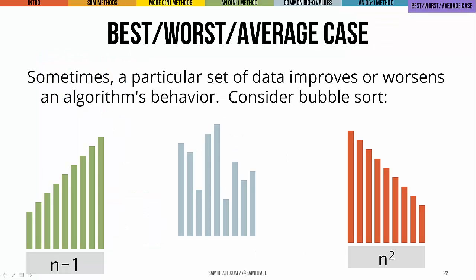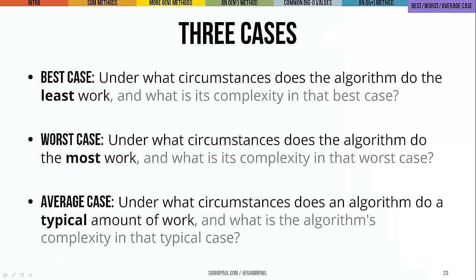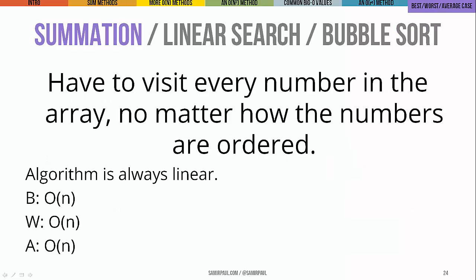Lots of algorithms don't have a single measure of their complexity that applies to every possible case. Sometimes an algorithm's behavior improves or gets worse depending on the particular data set or its arrangement. For example, think about bubble sort: if your data set is already sorted, bubble sort only takes n minus one comparisons, then recognizes it's sorted and exits immediately — that's linear runtime. But in many other cases, bubble sort takes a solid n squared quadratic runtime. People spend a lot of energy doing detailed mathematical analysis to figure out how an algorithm behaves in its best case, worst case, and average case.